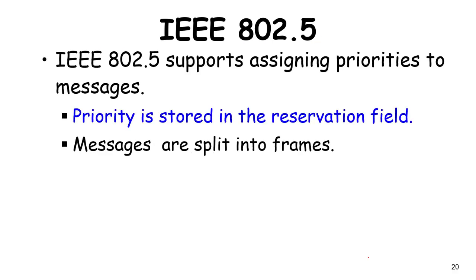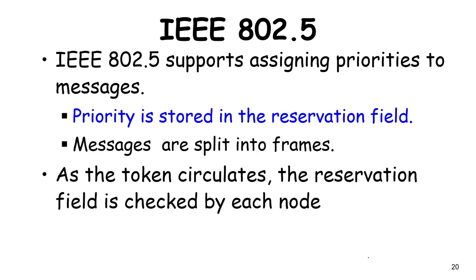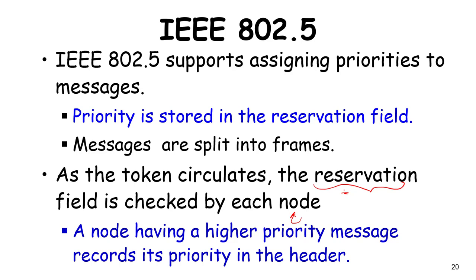In 802.5, the reservation field stores the priority of the message, assuming priorities are honestly assigned. Messages are split into frames. A token is circulated, and each node checks the reservation field. If a node has a higher priority message than what is currently in the token's reservation field, it overwrites that field with its own priority. This assumes all nodes are cooperating with full honesty.